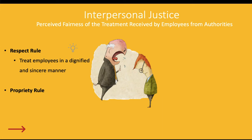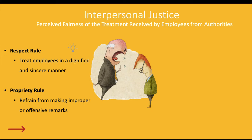The second rule for interpersonal justice is the propriety rule, which says an authority figure will refrain from making any improper or offensive remarks. They will not use crude language or engage in hostile or harassing behaviors. Sexual harassment — making comments about someone's body or what they're wearing — would certainly break the propriety rule. Not only should we treat people in a dignified way, but we must refrain from any comments that are improper, harassing, or bullying. When we follow these two rules, we are able to demonstrate interpersonal justice.